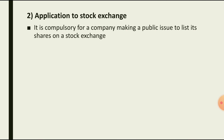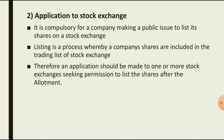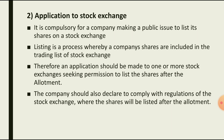Seventh, application to stock exchange. It is compulsory for a company making a public issue to list its shares on a stock exchange. Listing is a process whereby the company's shares are included in the trading list of the stock exchange, which gives them transferability. An application should be made to one or more stock exchanges seeking permission to list the shares after allotment, and the company must declare compliance with the regulations of that stock exchange.